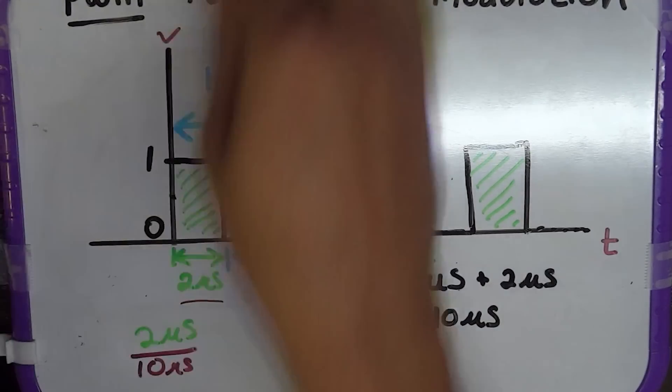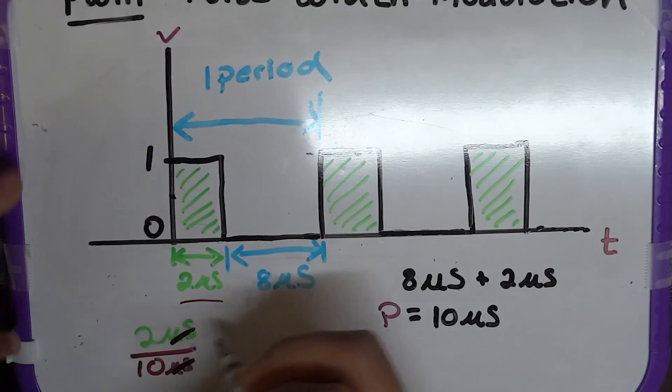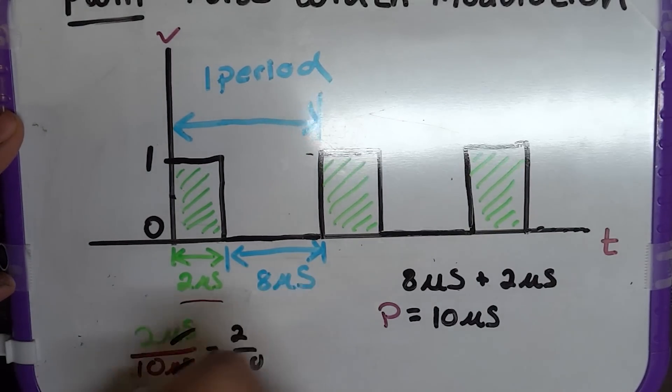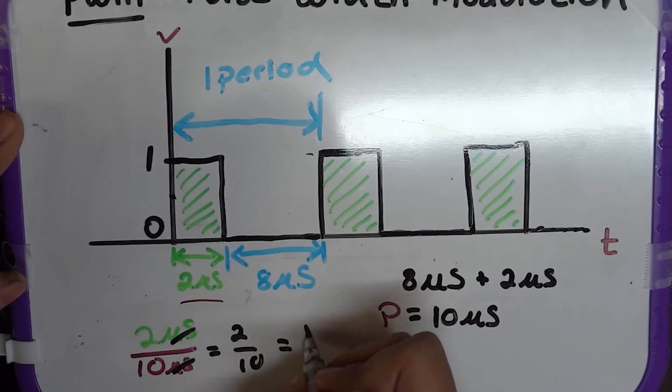So, you could probably see the microseconds cancel. You're left with 2 over 10. And this is equal to 1 fifth.